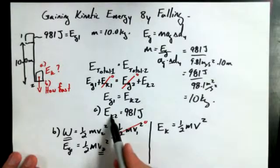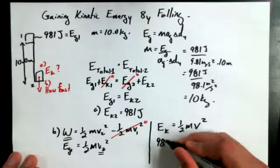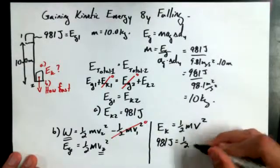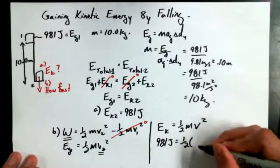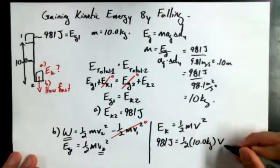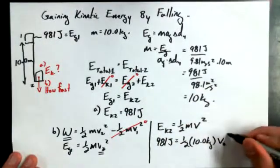And I know that EK2 is going to be equal to 981 joules. I could say 981 joules is equal to 1 half times the mass was 10 kilograms times v, that's really EK2 and it's v2 squared.